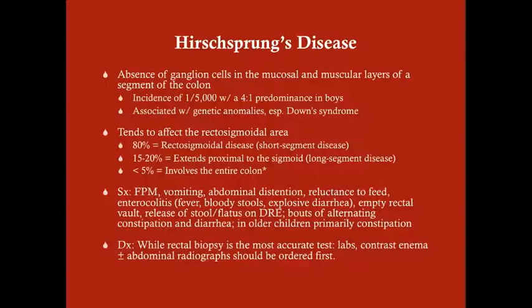The incidence is about 1 in 5,000 with a 4-to-1 male predominance. It's associated with genetic anomalies, particularly Down syndrome, and tends to affect the rectosigmoidal area. 80% are limited to this short segment disease. About 15% extend proximally — long segment disease — and less than 5% involve the entire colon, which tends to be familial rather than associated with genetic anomalies.